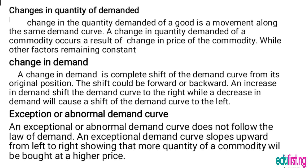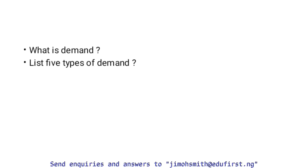Change in quantity demanded: a change in the quantity demanded of a good is a movement along the same demand curve. It occurs as a result of a change in the price of the commodity while other factors remain constant. Change in demand: a change in demand is a complete shift of the demand curve from its original position. The shift could be forward or backward — an increase in demand shifts the curve to the right, while a decrease in demand causes a shift to the left.